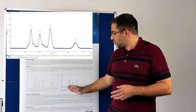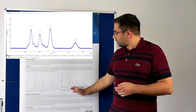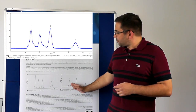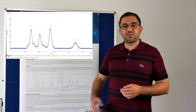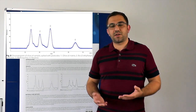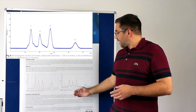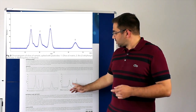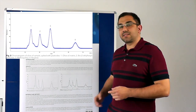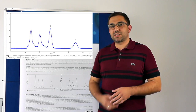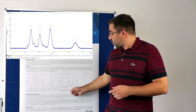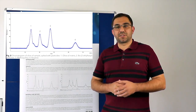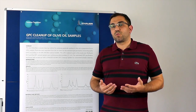What you can do now is fractionate, for example, two fractions: one for waste containing the high molecular weight residues, and one for your analytes of interest. You can also collect more than two fractions for further analysis of the peaks of interest.